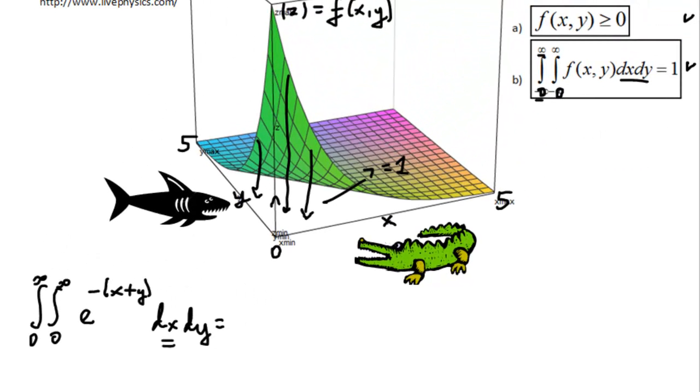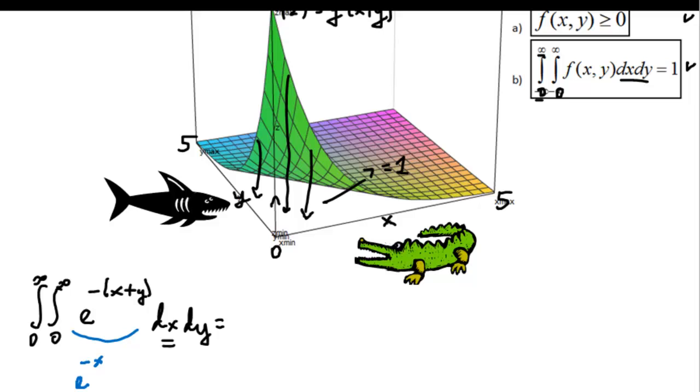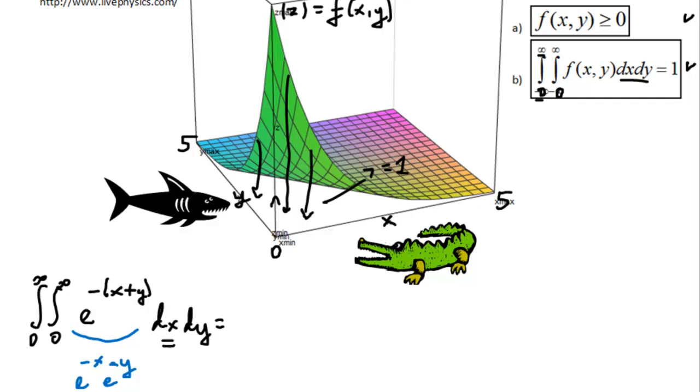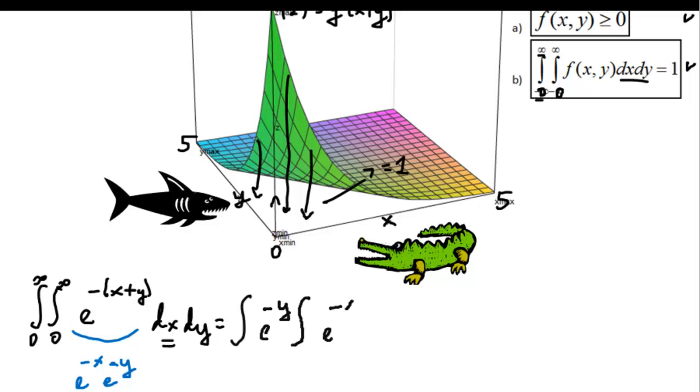Please note that this expression here, i.e. e to the power of minus x plus y, can be written in the following way: e to the power of minus x, times e to the power of minus y. So we, first of all, integrate with respect to x, so we can move this e to minus y in front of the second integral. So we have the first integral, and then e to minus y, then we've got the second integral, e to minus x, and then dx, and then dy.